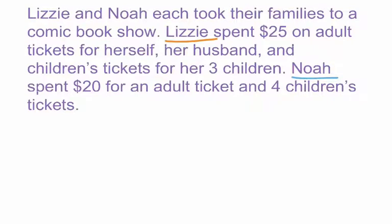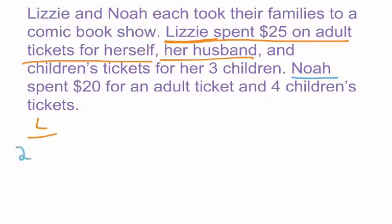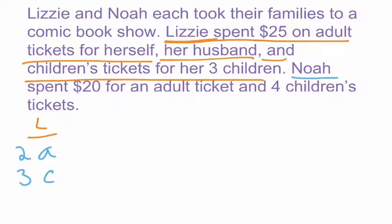We'll write an equation first for Lizzie. Going back to that sentence — Lizzie spent $25 on adult tickets for herself and her husband, so that's two adult tickets. Then children's tickets for her three children, so three children's tickets. I'm using variables A and C — A for adult tickets, C for children's tickets. We'll probably change those to X and Y when we solve, but I'll leave them like that for now. We know she spent $25.